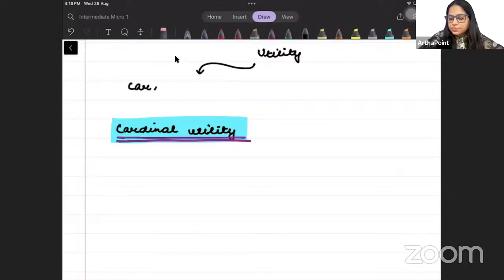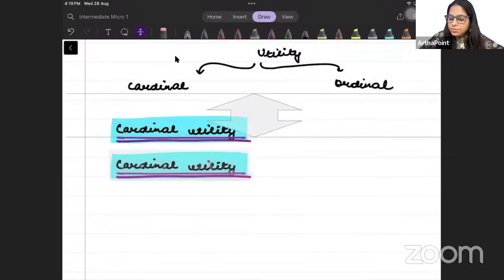Cardinal utility, ordinal utility. Cardinal utility gives importance to giving numbers to utility. It gives importance to magnitude. But ordinal utility concept gives importance to ranking of bundles.